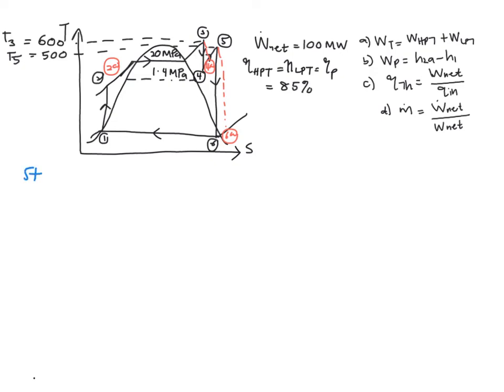Next is to look for state 5. Given P5 equals 1.4 MPa and temperature at state 5 where it is being reheated to 500 degrees C, and again when you are given pressure and temperature you read directly from the table of superheated steam which is table E6.